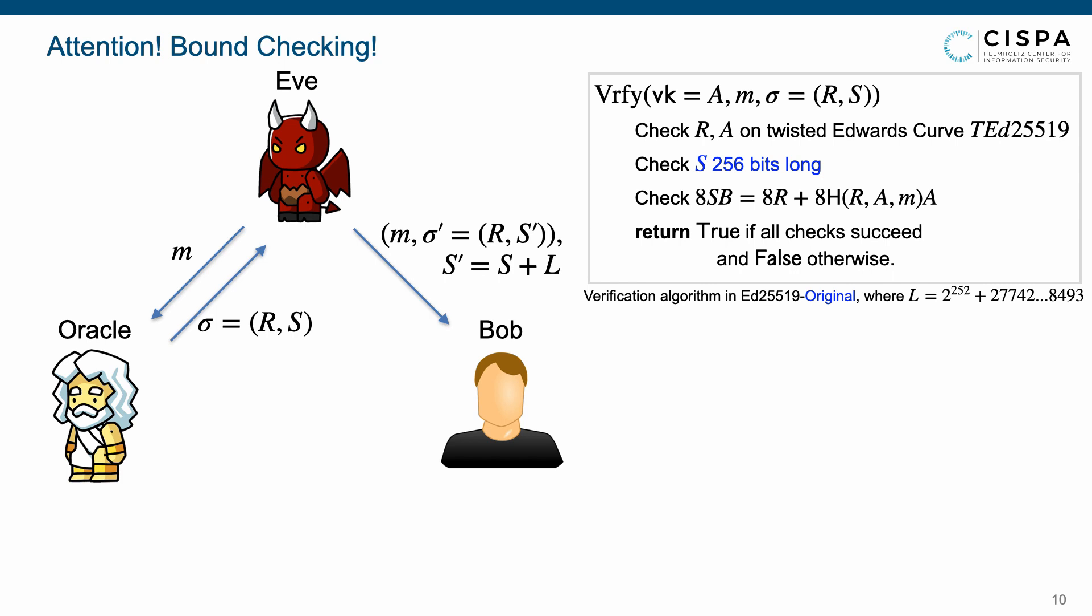It's straightforward that the first and third checks are passed because the points R and A both are honestly generated, and the base point B has order L. Then, the adversary wins if S' is 256 bits long, which occurs with non-negligible probability, and indicates that ED25519 original is not strongly unforgeable.